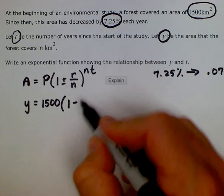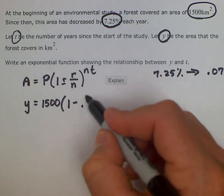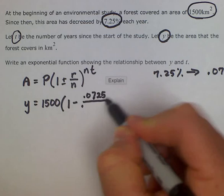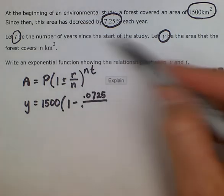So we would subtract out 0.0725 divided by the number of times or the number of years it's compounded, which is just 1.